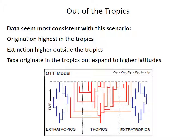So it seems that extinction rates are actually higher outside of the tropics, but that's being offset by migration or immigration from the tropics. Most importantly — and this is really the key to how the Out of the Tropics model differs from the other models — tropical taxa expand their ranges over time towards higher latitudes. That explains both the modern distribution, where formerly tropical taxa now live both in the tropics and outside of them, and also why extratropical taxa are older on average, because there's a time lag between when a clade originates and when it expands its range to extratropical areas.